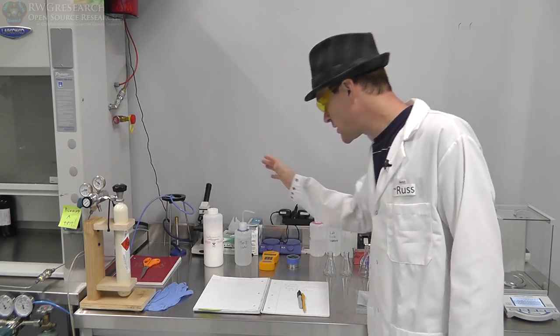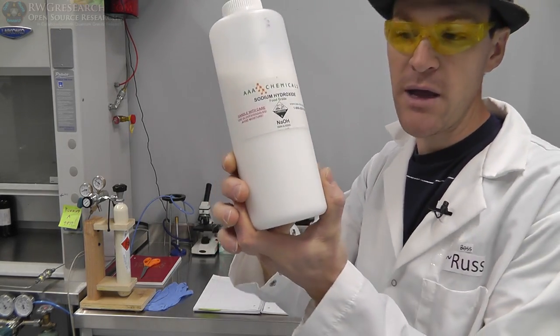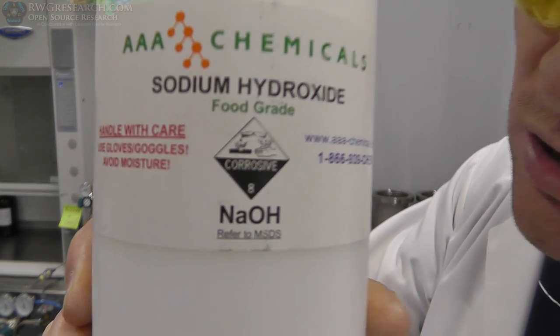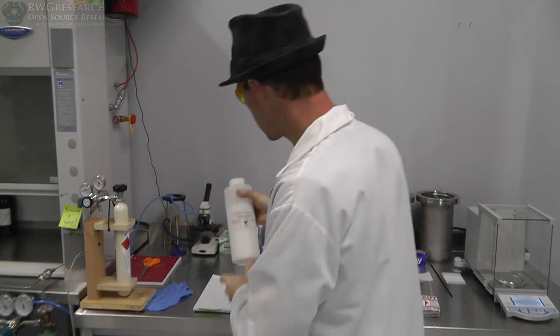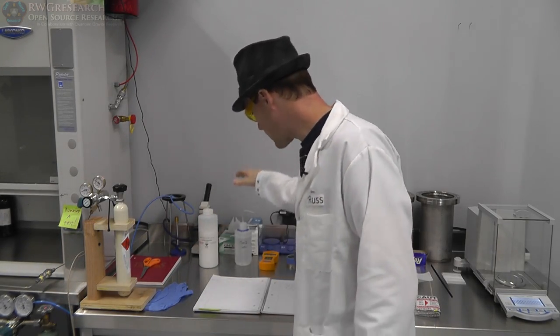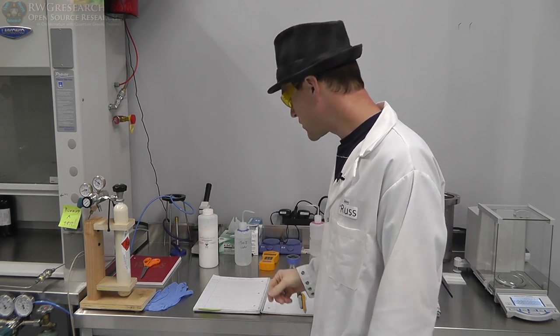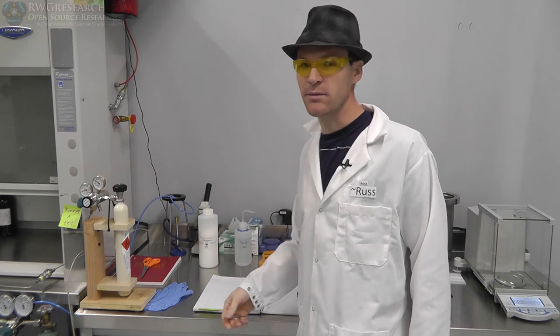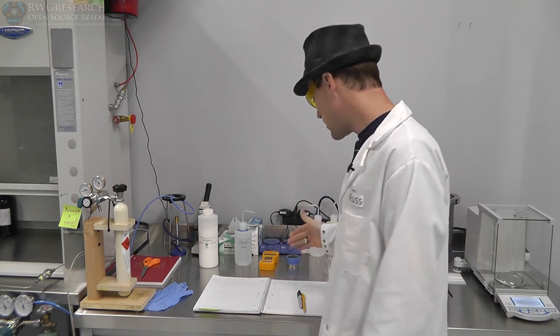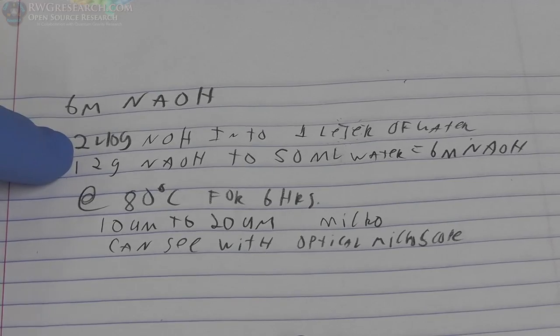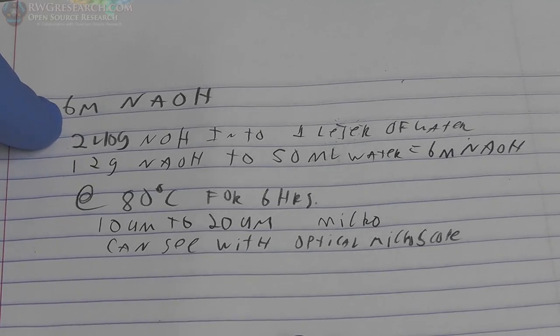We're going to be taking sodium hydroxide. This is NaOH. We're going to be taking this chemical and we're going to be mixing it with, in my case, type 2 deionized water. Water in general should be fine, but I'm just using clean water because I have it. So what we're going to be doing is we're going to be making a 6M, that's a 6 mole, NaOH solution.